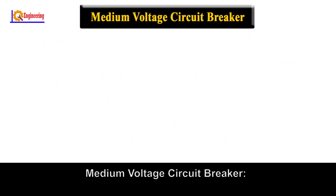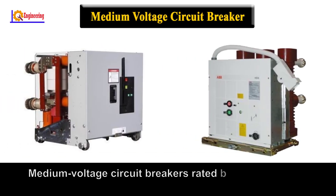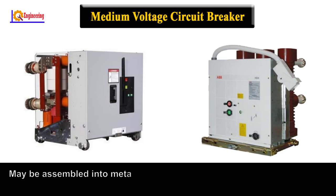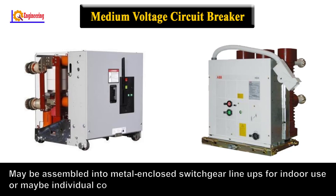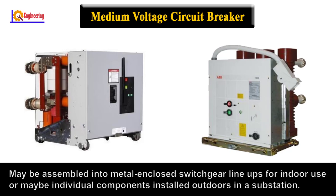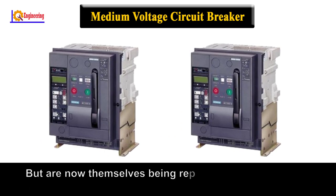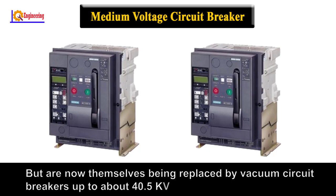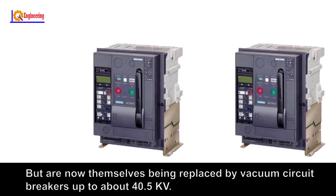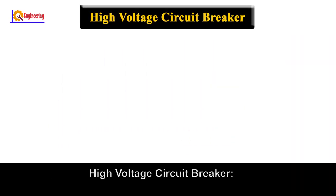Medium voltage circuit breakers rated between 1 and 72 kV may be assembled into metal-enclosed switchgear lineups for indoor use, or may be individual components installed outdoors in a substation. Air blast circuit breakers replaced oil-filled units for indoor applications, but are now themselves being replaced by vacuum circuit breakers up to about 40.5 kV.